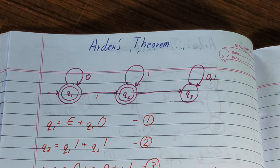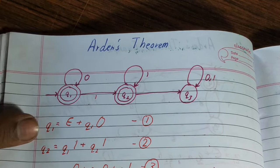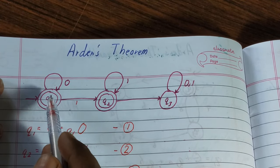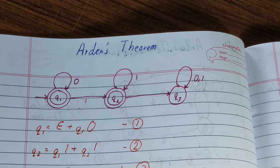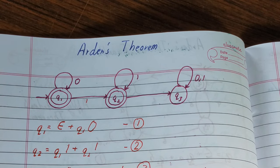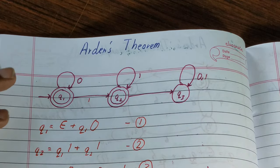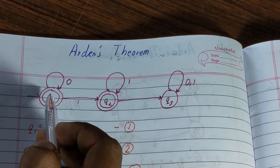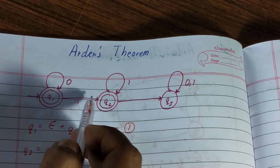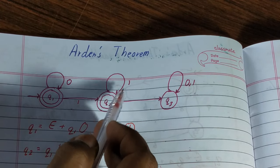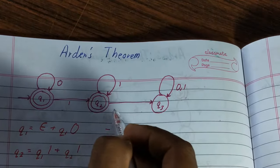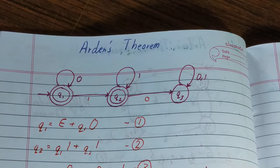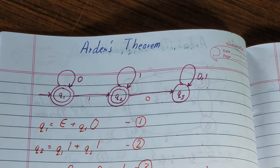Let's start. This is our state diagram and in this state there are three states: q1, q2, and q3. Now the next thing you need to see is the incoming edges to all the particular states. For q1, there is only one incoming edge: q1 on 0. For q2, there are two: q1 on 1 and q2 on 1. For q3, there are three incoming edges: q2 on 0, q3 on 0, and q3 on 1.